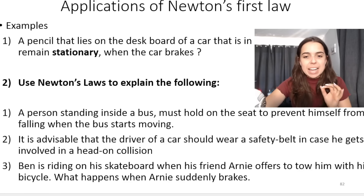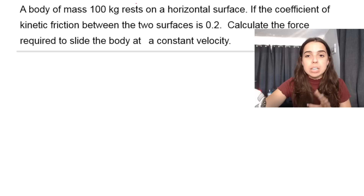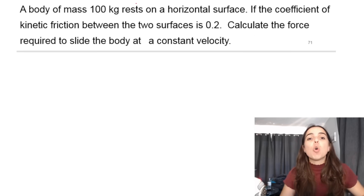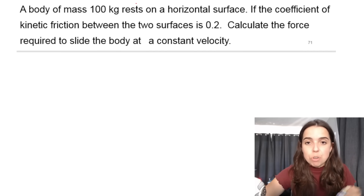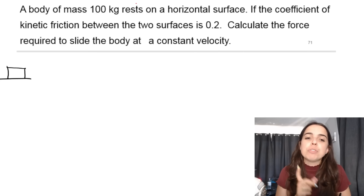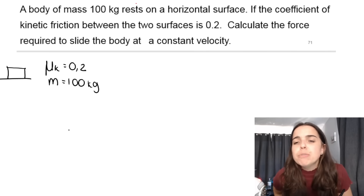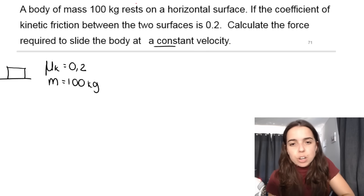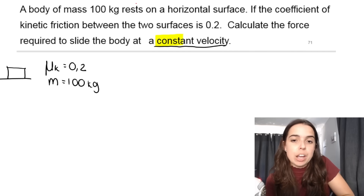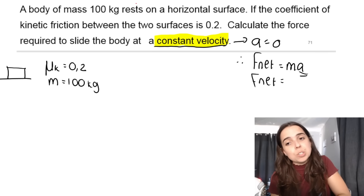Now let's jump into a Newton's first law calculation. We have a body of mass 100 kilograms resting on a horizontal surface. They give us the coefficient of kinetic friction, μ_k = 0.2, and the mass is 100 kilograms. The question asks us to calculate the force required to slide the body at a constant velocity. We know it's a Newton's first law question because of the wording 'constant velocity,' which means acceleration is zero, and therefore F_net equals zero.